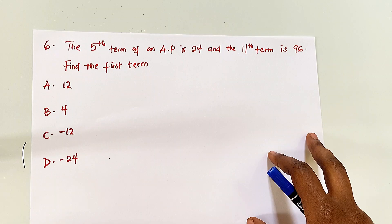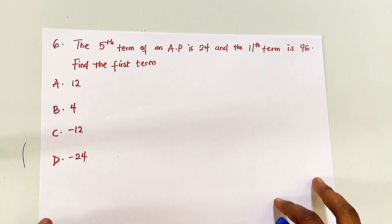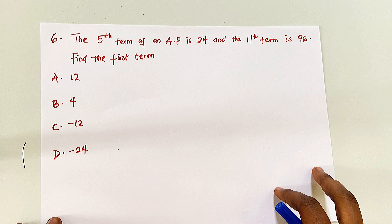This next question is similar to the previous one. The 5th term of an AP is 24 and the 11th term is 96. Find the first term. Write an equation for the 5th term as a + 4d, and for the 11th term as a + 10d. Use the elimination method to find d first, then substitute back into one of the equations to find a.